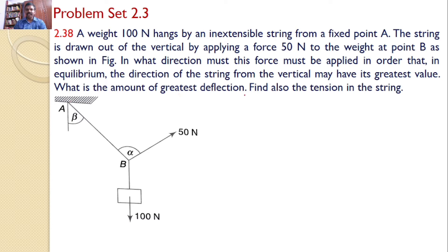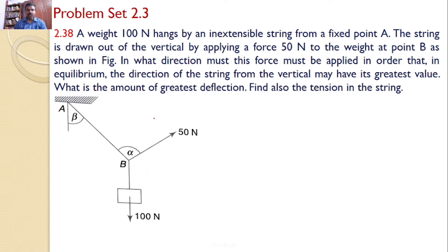What is the amount of greatest deflection? Find also the tension in the string. There is a string AB and a weight of 100 newtons acts at B. A 50 newton force is acting in a certain direction. Our interest is to find the value of alpha so that beta is maximum, and also what is the value of beta and the tension in the string. These are the three parameters that we need to solve.